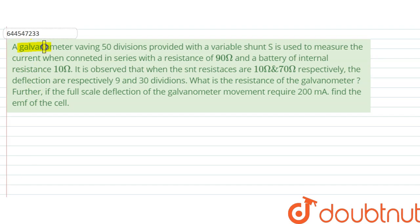The question says: a galvanometer having 50 divisions with a variable shunt S is used to measure current when connected in series with a resistance of 90 ohm.